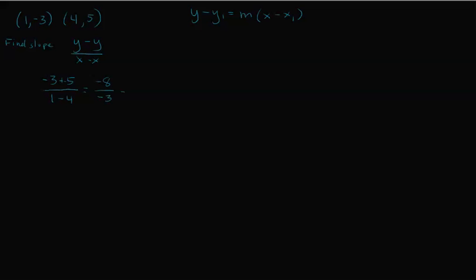That gives us negative eight over negative three, which is eight thirds — not a pretty slope. Now we found our slope, so eight thirds goes into the formula. We can pick either point; let's go with (4, 5) since both are positive. So: y minus five equals eight thirds times (x minus four). Multiplying out: eight thirds times x is (8/3)x, and eight thirds times negative four is negative 32 over three.